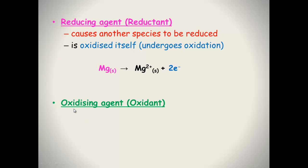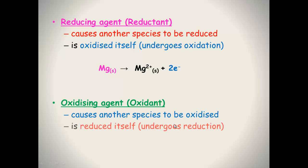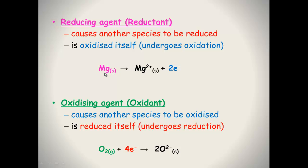The oxidizing agent or the oxidant causes another species to be oxidized, so it itself is reduced — it undergoes reduction. Here's the example of oxygen: oxygen is accepting four electrons, so this is a reduction reaction. But oxygen itself is the oxidizing agent or the oxidant — it is causing the oxidation of magnesium. Magnesium is the reducing agent or reductant because it's causing the reduction of oxygen.